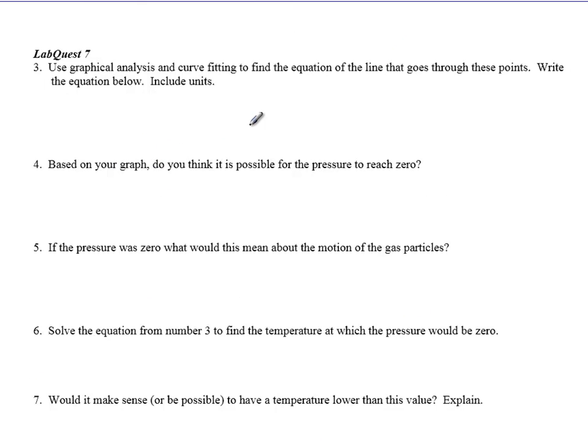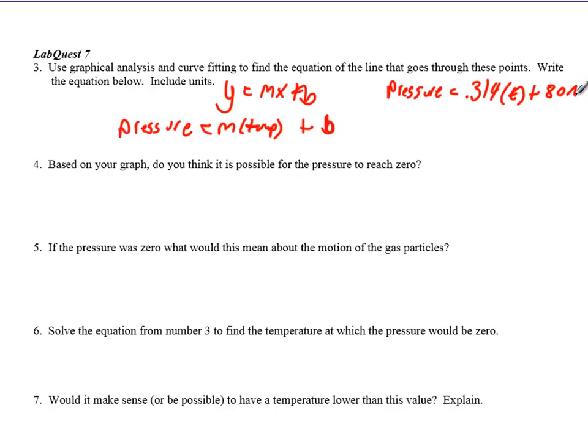Use graphical analysis to get a line that goes to these points. Write the equation below and include units. Now, y equals mx plus b is the standard equation of the line. But your y value over here is pressure. So you had pressure equals the slope, m, times the temperature. That was what our x values were. Plus b, which is the pressure at 0. So really what I have is pressure equals, and my data that I got from my class was 0.314 times T plus 86, I think, or 80.6. So that's what I mean when I say units. What I'm trying to get you to do is what's y, y is pressure, what's x, x is temperature.